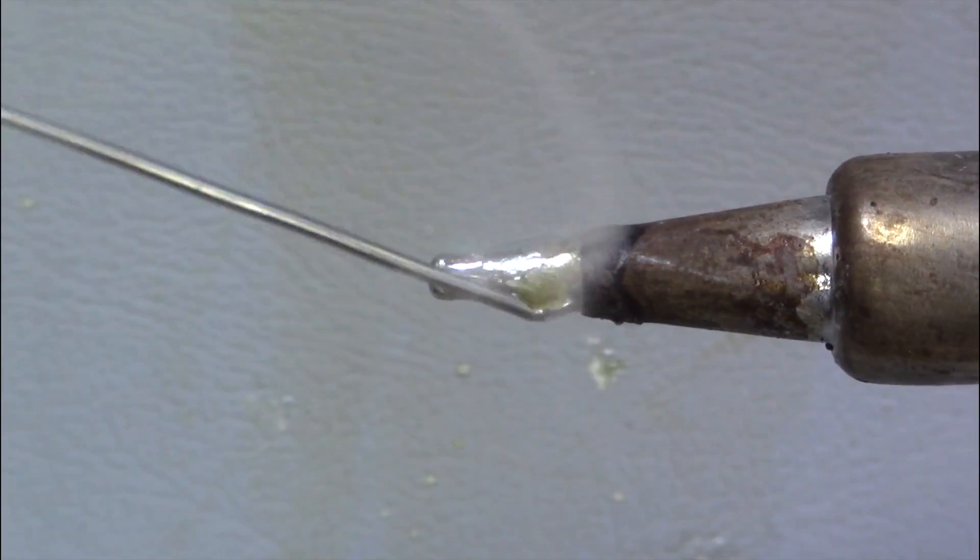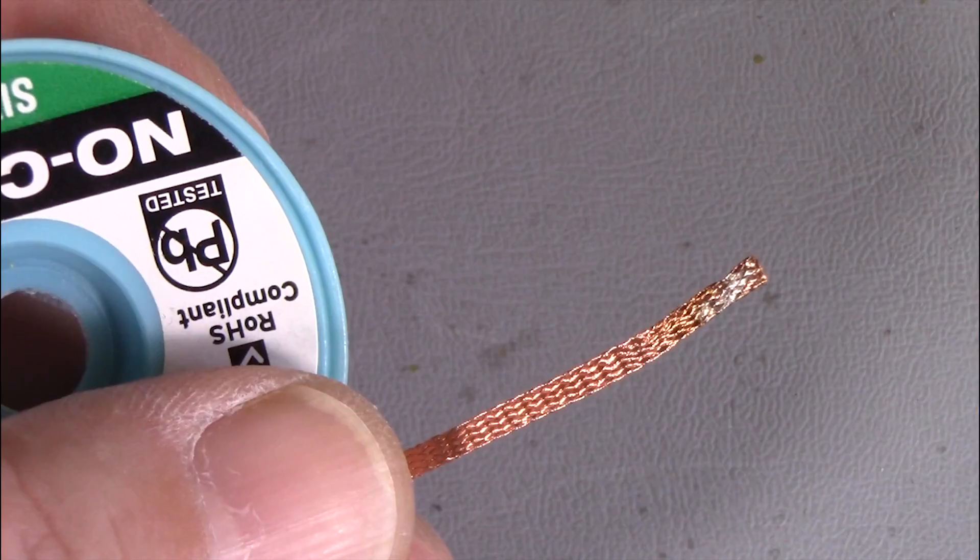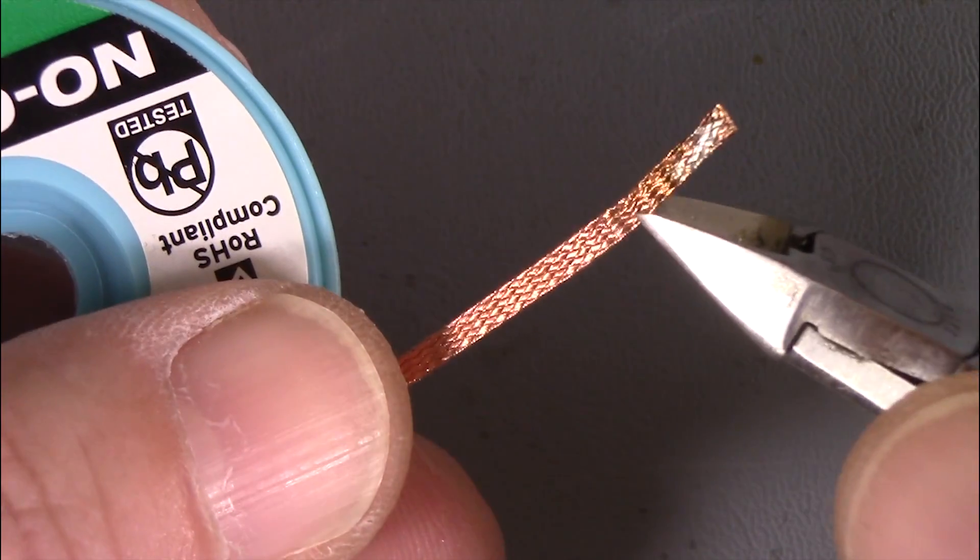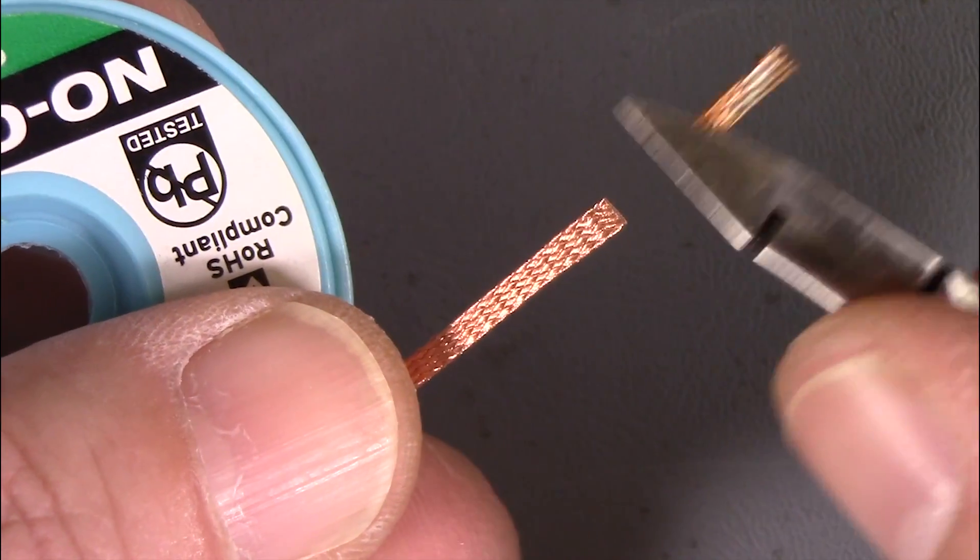Tend the tip and return the iron to its stand. Trim the used part of the wick off so you can start with a clean end next time.